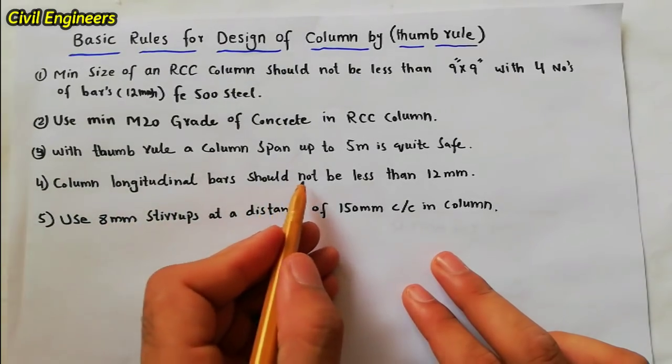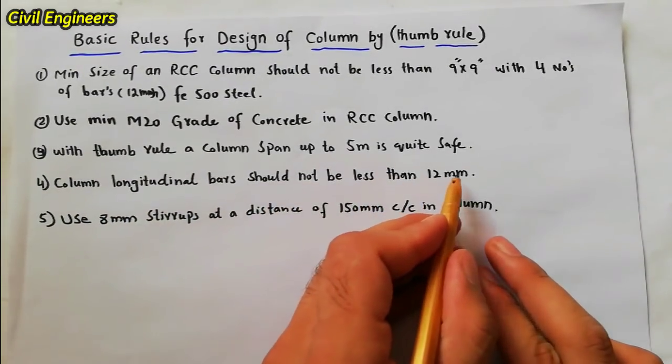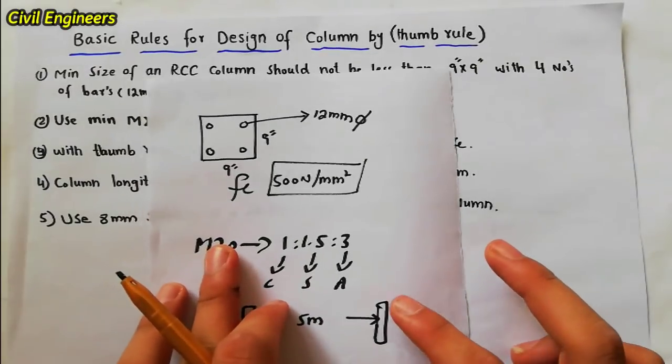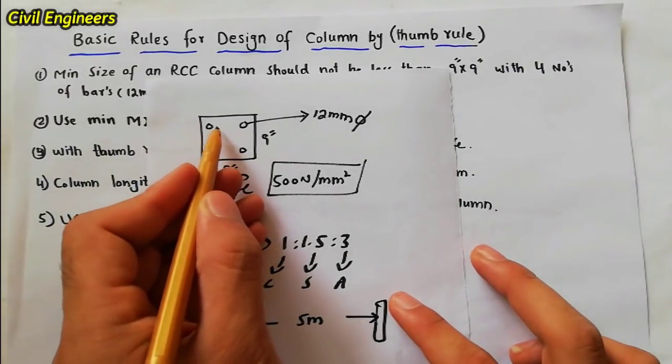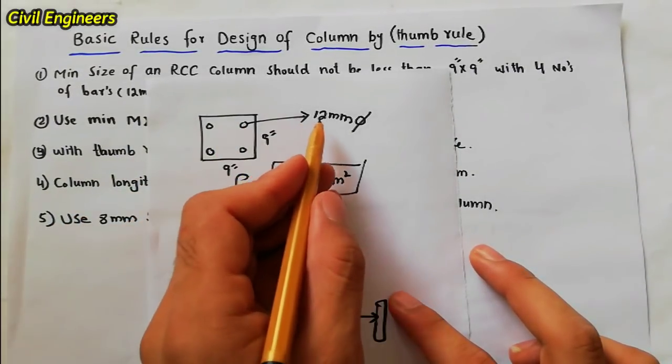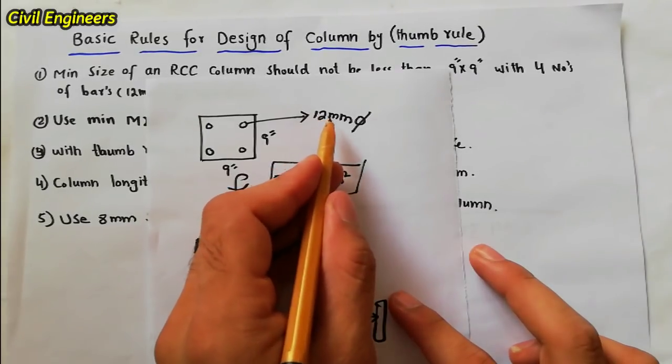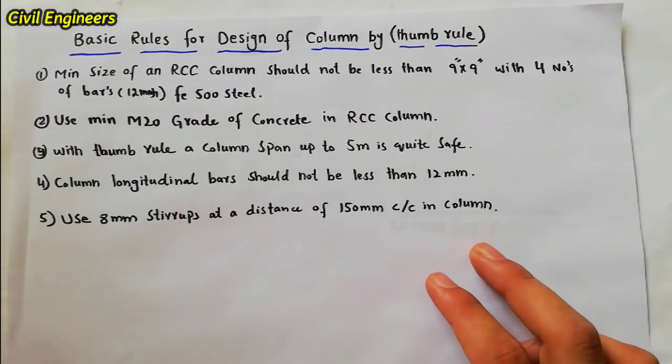The other one is column longitudinal bars should not be less than 12mm. So I have already told you here that these are the four steel bars and the diameter should not be less than 12mm.